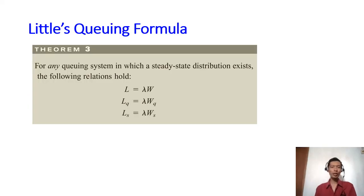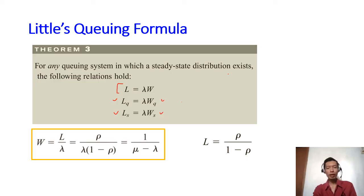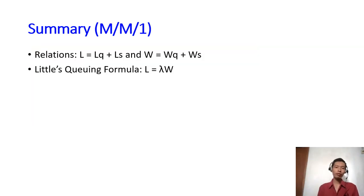Now let us derive W, Wq, and Ws. We're going to obtain W using Little's queuing formula, which states that for any queuing system in which a steady-state distribution exists, L equals lambda times W. This applies for L with W, LQ with Wq, and LS with Ws. So if we have L, we get W from that relation; if we have LQ, we get Wq; and here's the formula for Ws.